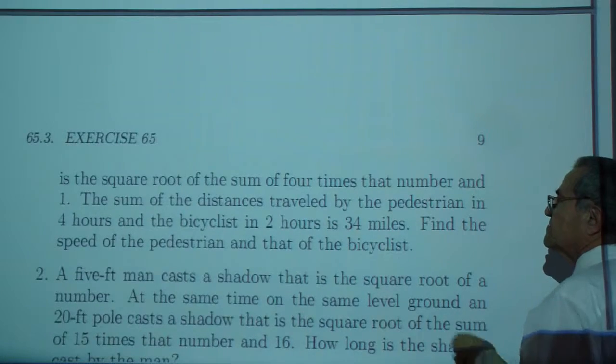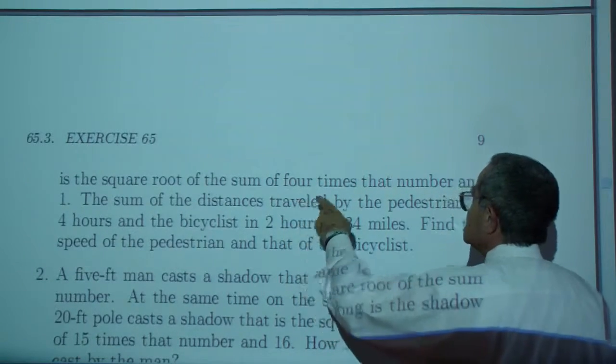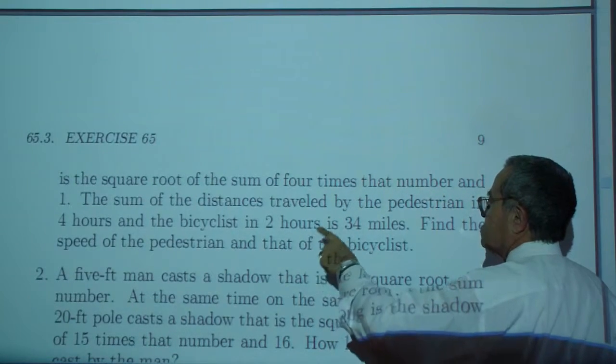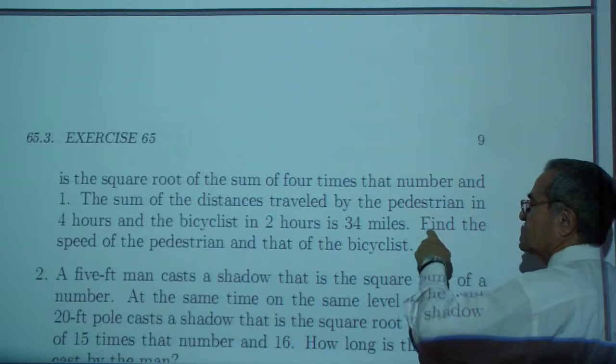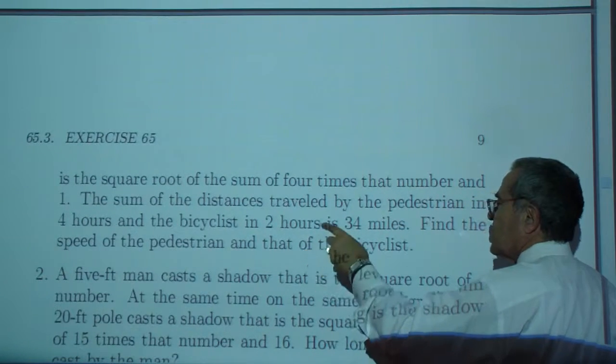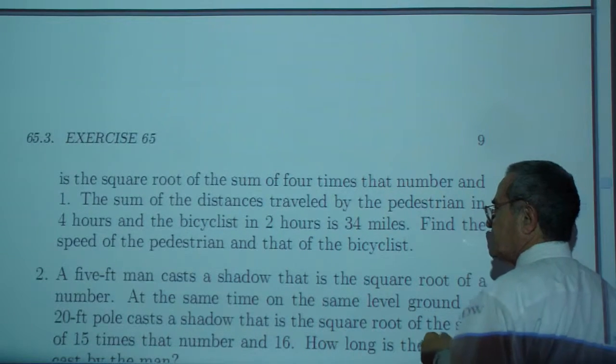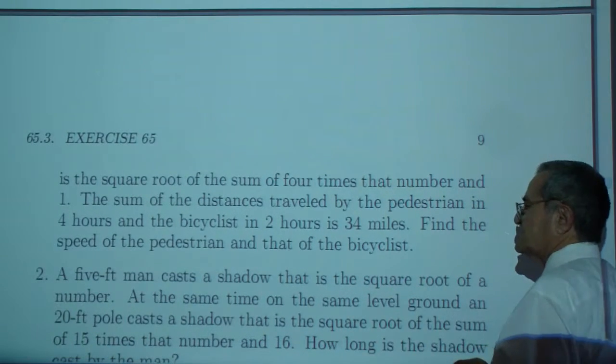The bicyclist's speed is the square root of the sum of four times that number and one. The sum of the distances traveled by the pedestrian in four hours and the bicyclist in two hours is 34 miles. Find the speed of the pedestrian and that of the bicyclist.